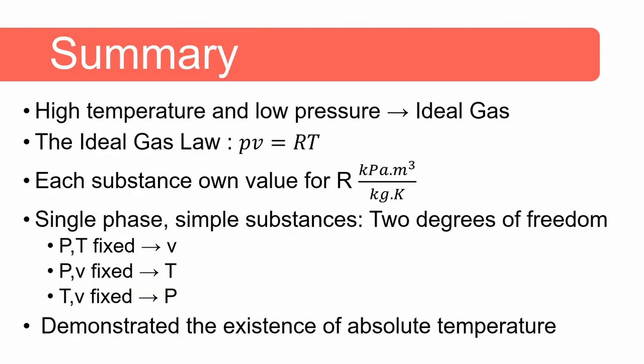Now, let's summarize. For gases at very high temperature and low pressure, we can use the ideal gas law. The ideal gas law is pressure times specific volume equals gas constant times temperature. Each substance has its own value for R, which is our gas constant. For single phase, simple substances, there's only a two degree of freedom for that system. And once two intensive variables are fixed, the whole system is fixed as well. And lastly, we have demonstrated the existence of absolute temperature.